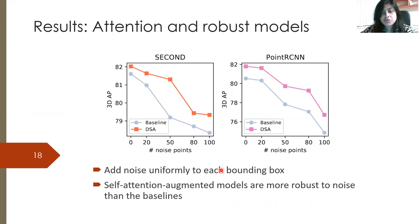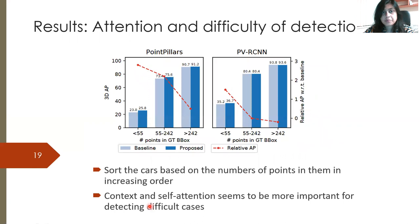We also add noise uniformly to each bounding box. We find that the gray line represents the baseline, and when the number of noise points varies from 0 to 100 for SECOND and Point R-CNN, self-attention augmented models are more robust to noise than the baselines.